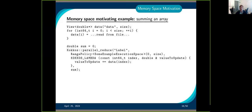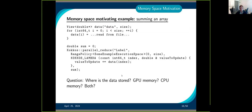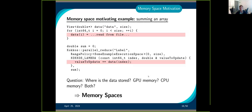Going back to our example: instead of allocating memory on the host, we allocate a view. We still want to read from file on the host, so we call a regular for loop, then we want to execute the parallel reduce on the GPU. The question is: where is the data stored? Is it on the GPU, on the CPU, or do we have copies of both? You can control where the memory is, thanks to the memory space.